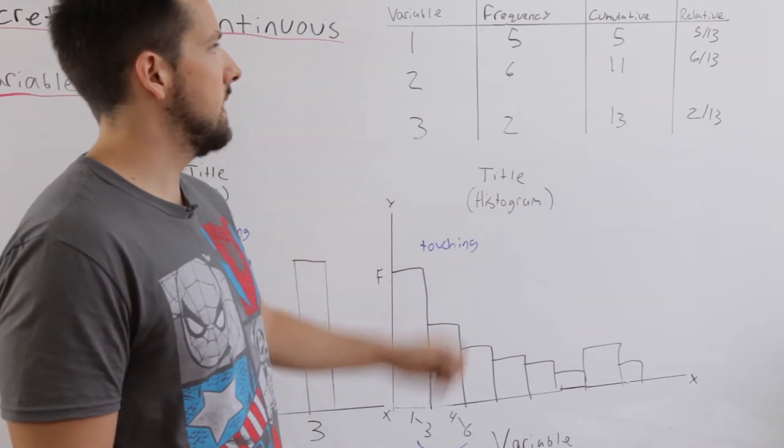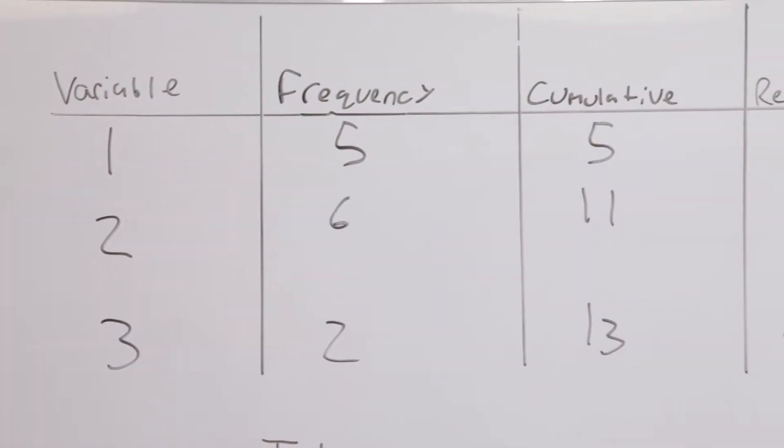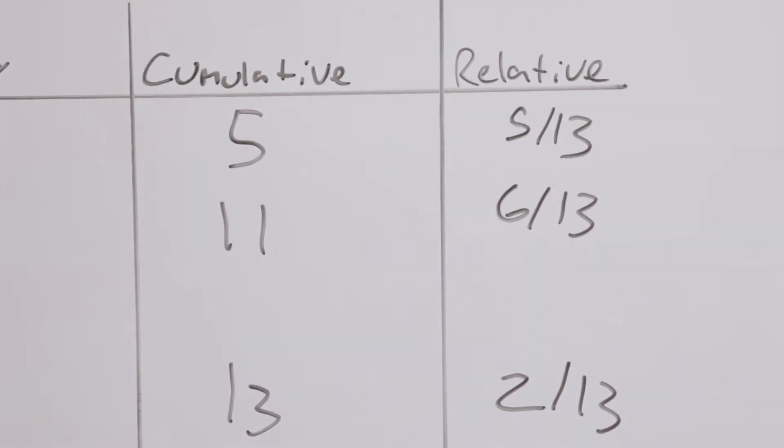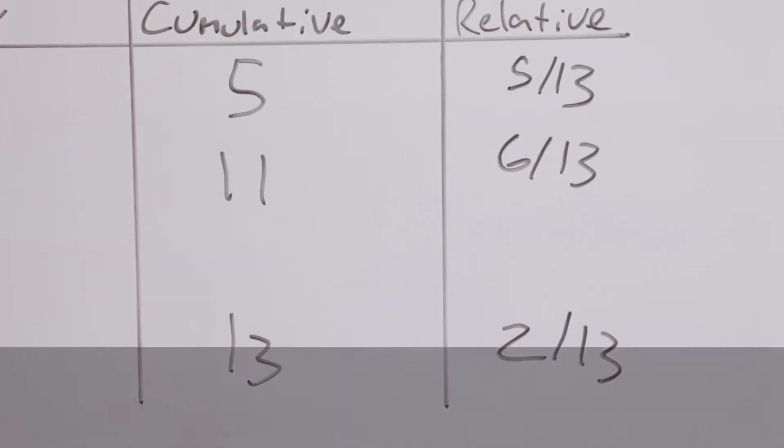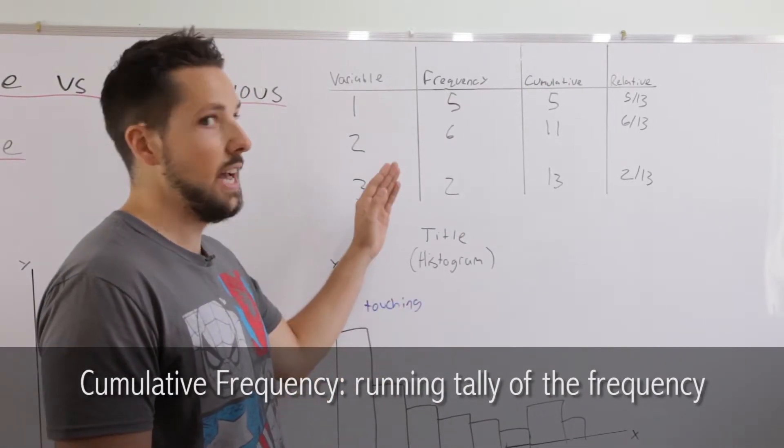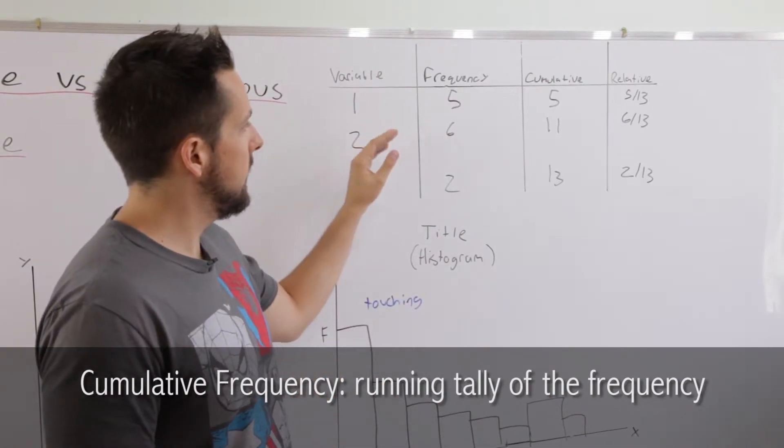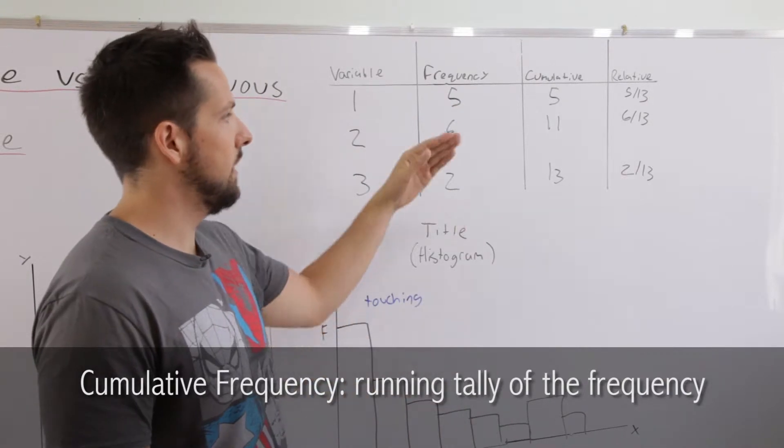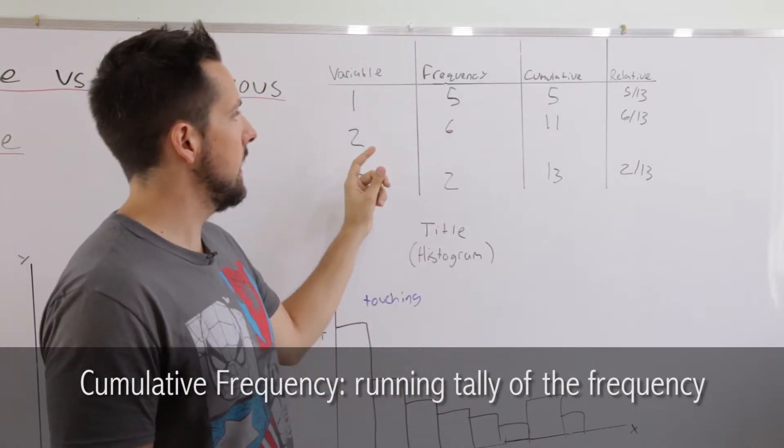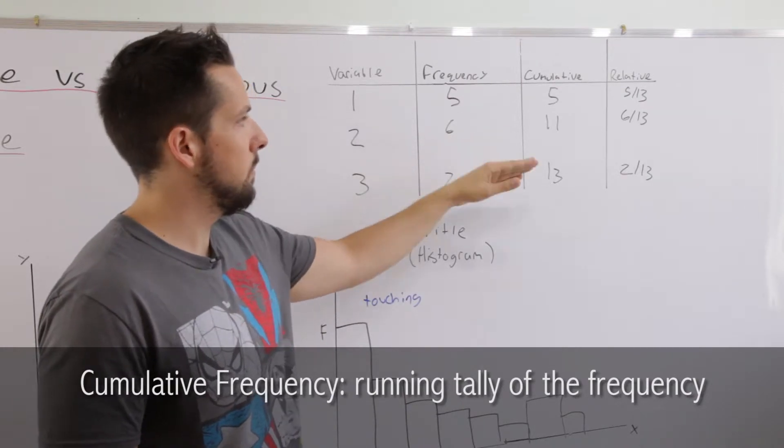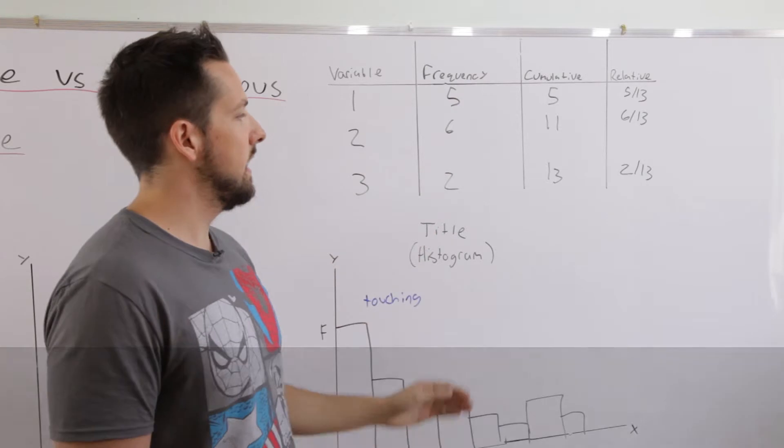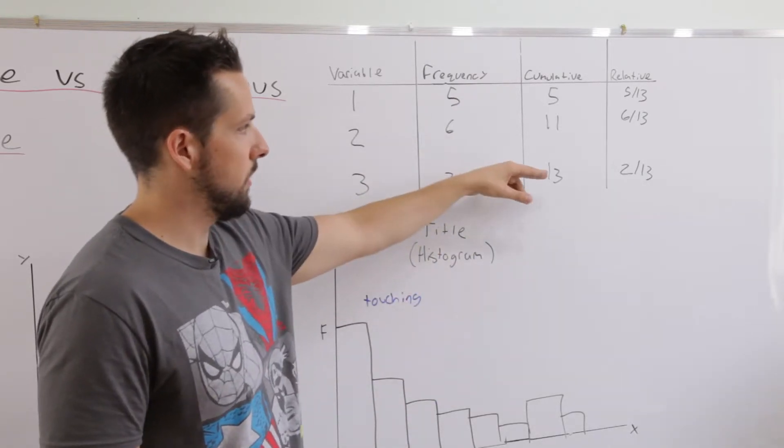Let's go back to the table for a second because there's more we can do with the frequency. There's two other types of frequencies that we tend to use, the cumulative frequency and the relative frequency. The cumulative frequency keeps a running tally of the variables as you go on. So each group contains its own data and all the previous data. The first group contains five. The next group contains its own six plus the previous five, so we write eleven. And the final group contains all the data, so thirteen.